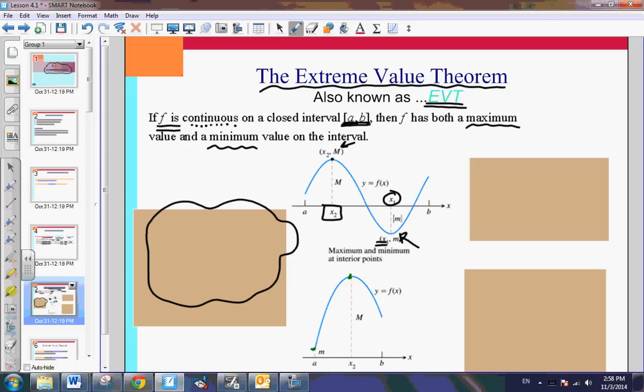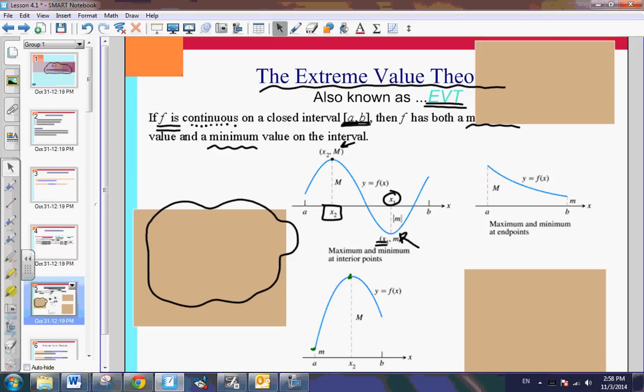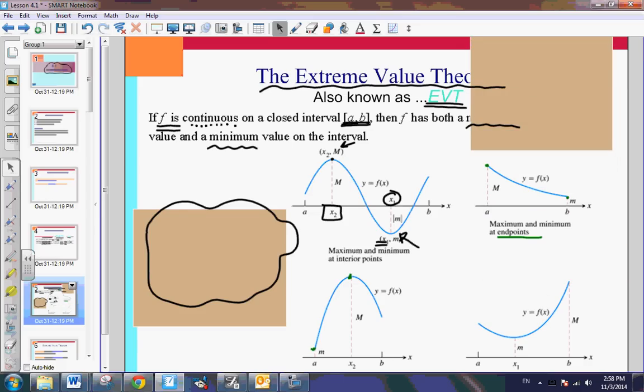Let's look at a third example. So on this example, we notice that the maxima and the minima both occur at end points, but it is continuous and it is closed. And the last type of scenario we could have is where the minima occurs on the interior and the maximum occurs on an end point. But again, it's closed and continuous. Are you getting those two conditions? Closed and continuous.